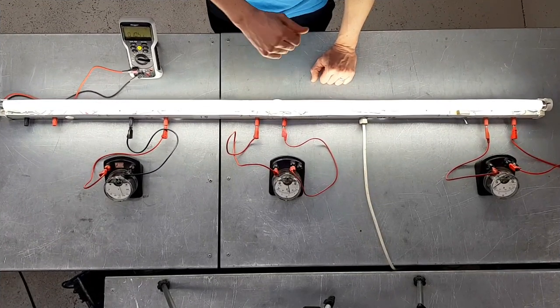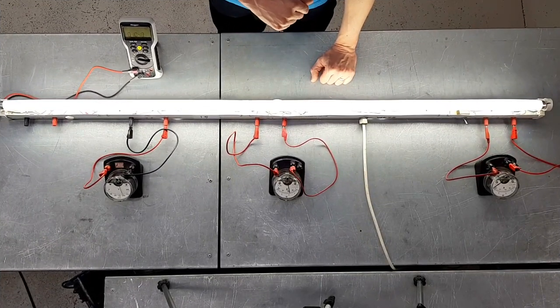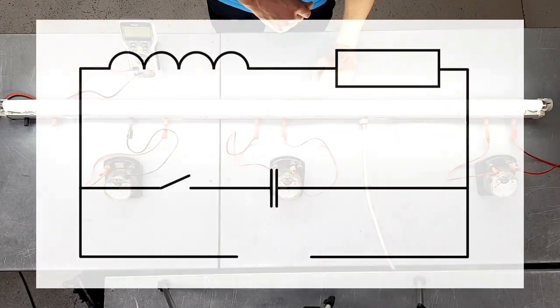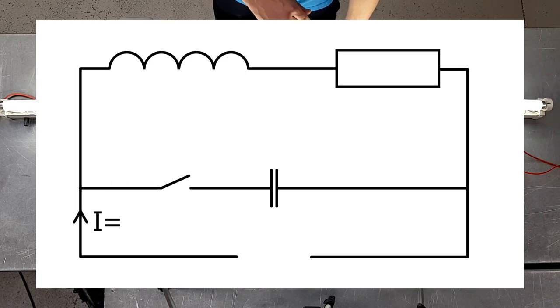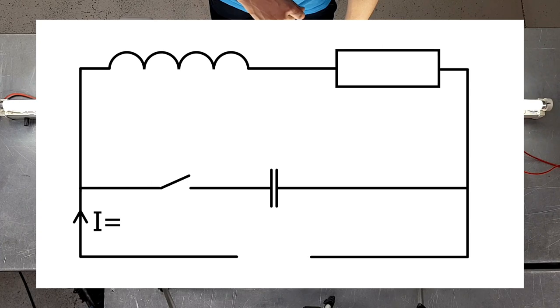Okay, so this is how much current is flowing into the circuit. We can see on our drawing that the current flowing into the circuit and the current flowing through the lamp and the choke are exactly the same.